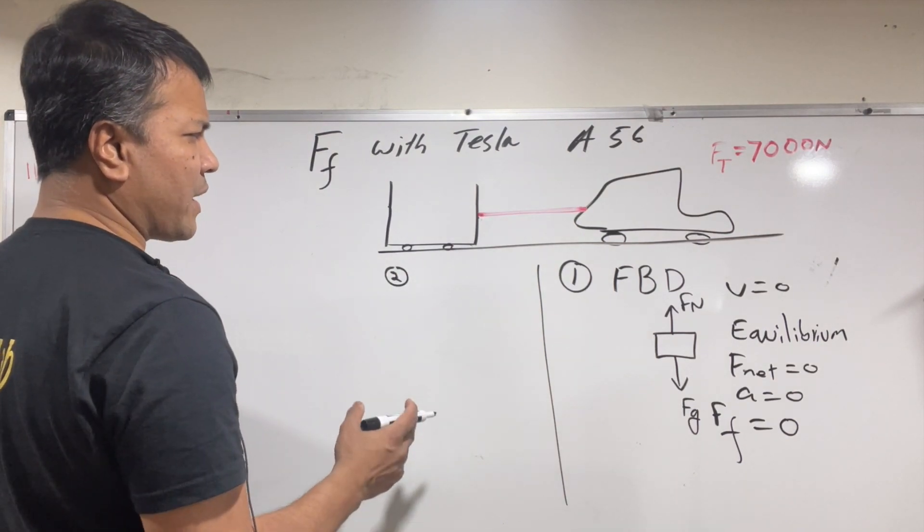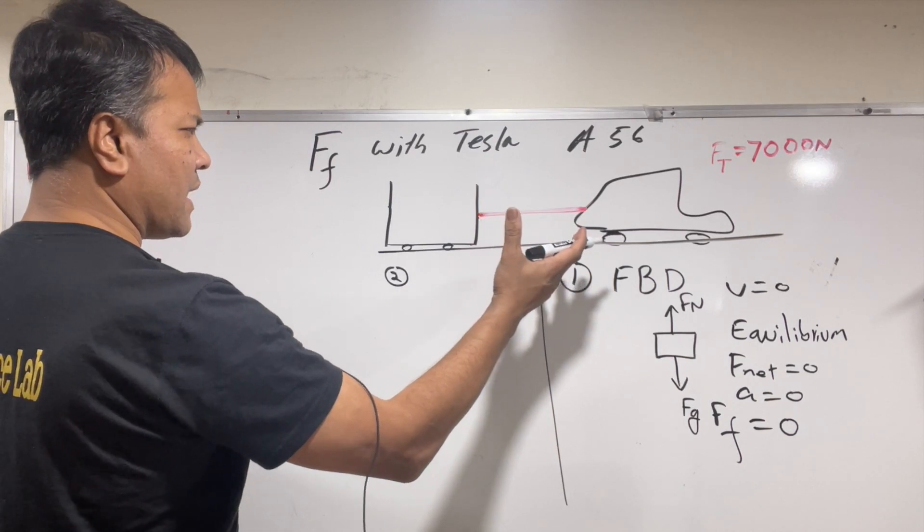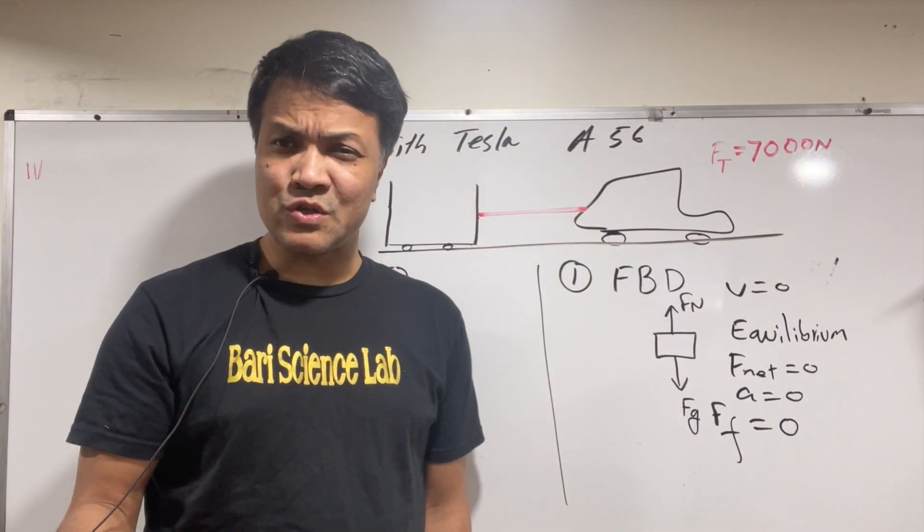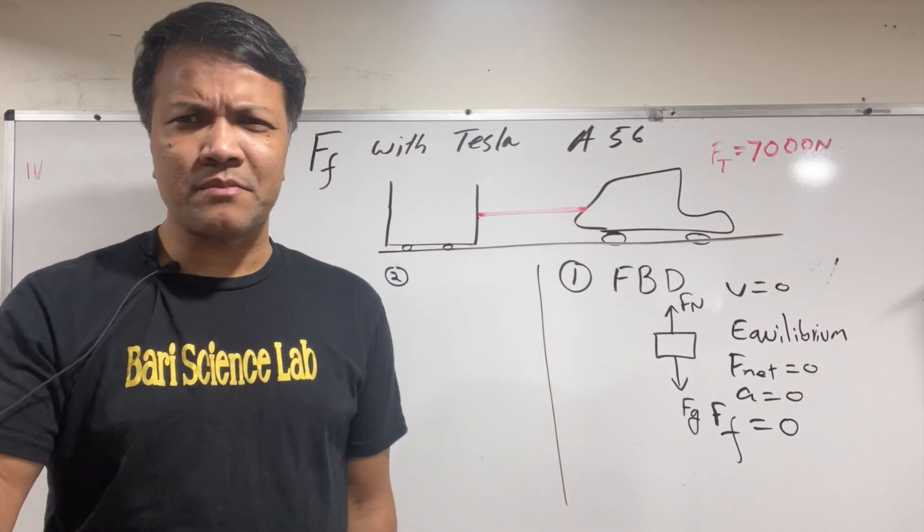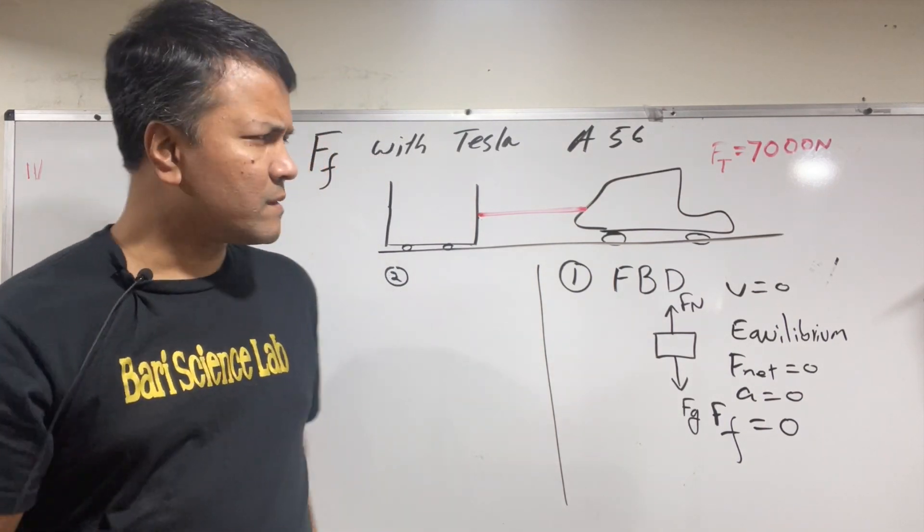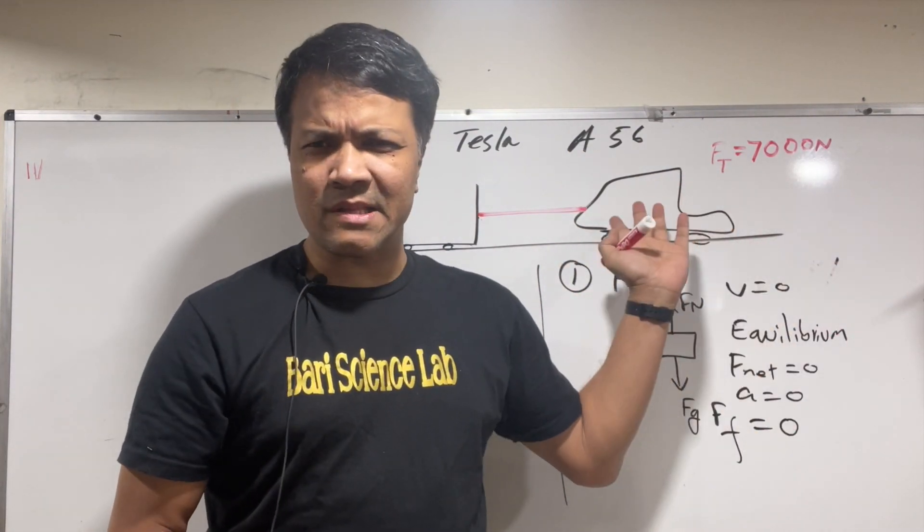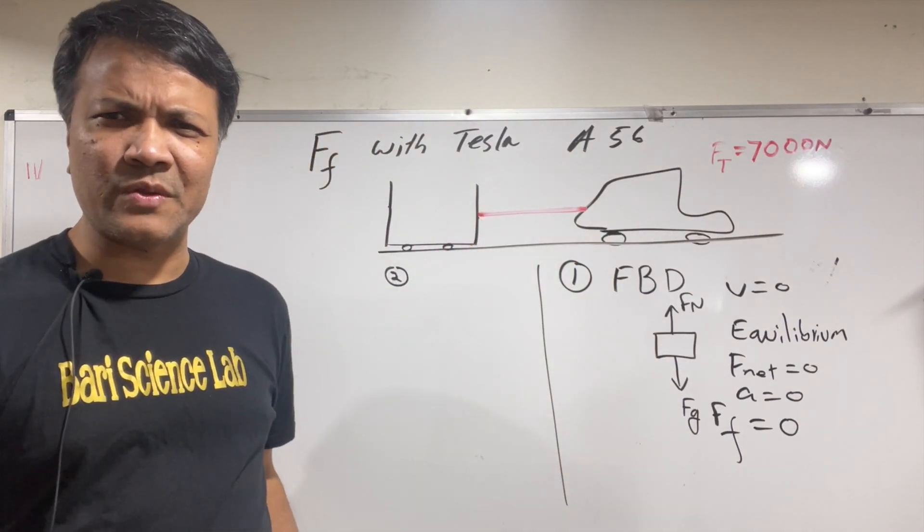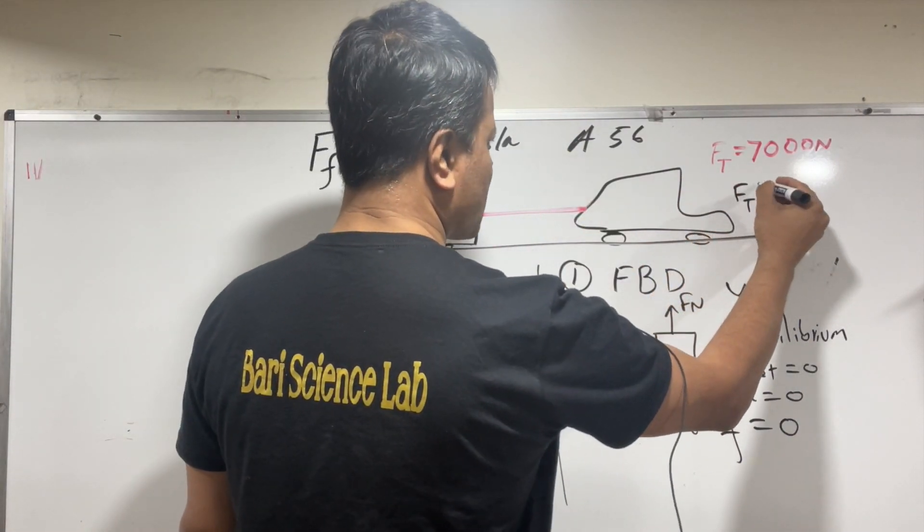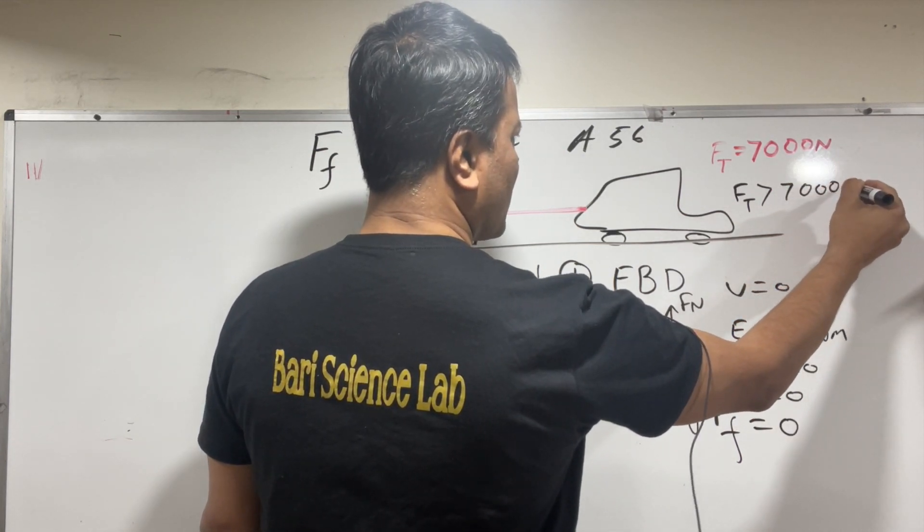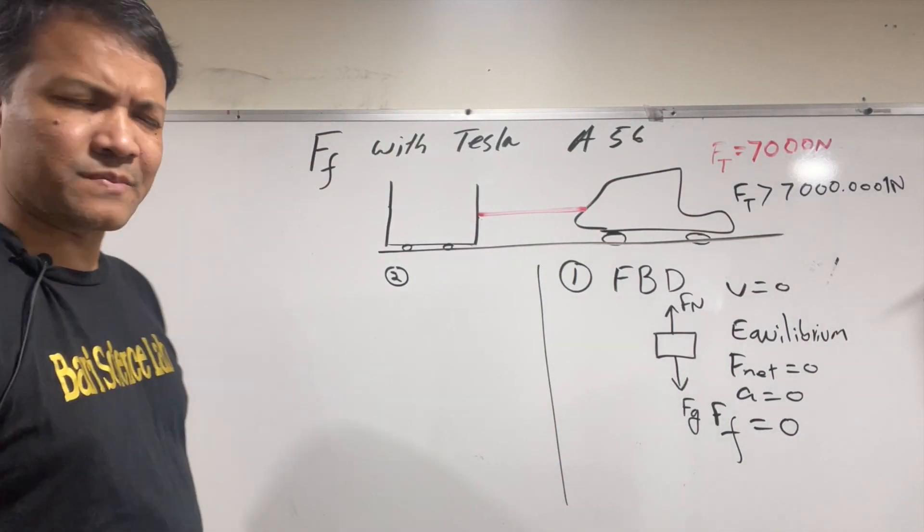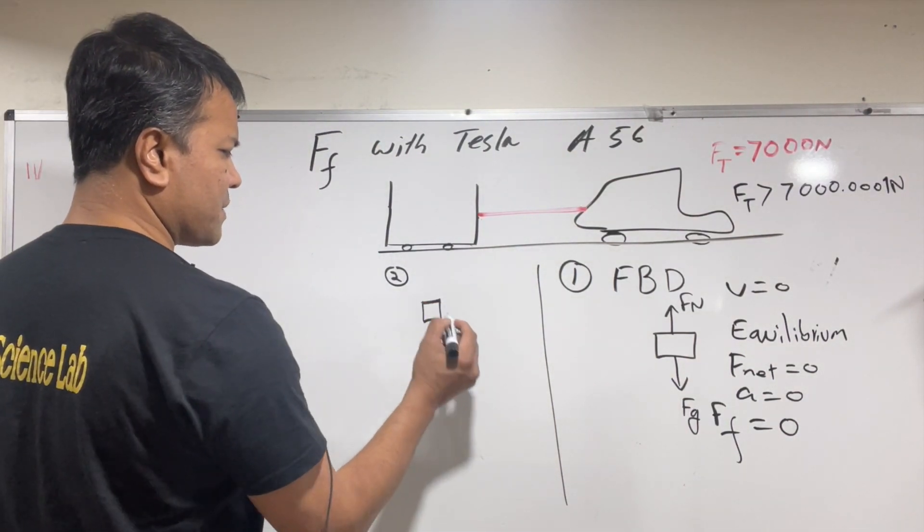Question two: what happens when Mr. Barry applies force? What would be the minimum force Mr. Barry has to apply so the rope breaks? He can accelerate the car, and if he accelerates the car too much, if anything beyond 7000, then this breaks. It cannot handle more than 7000, so we know for sure that the rope breaks when it is a tiny amount more than 7000 newtons.